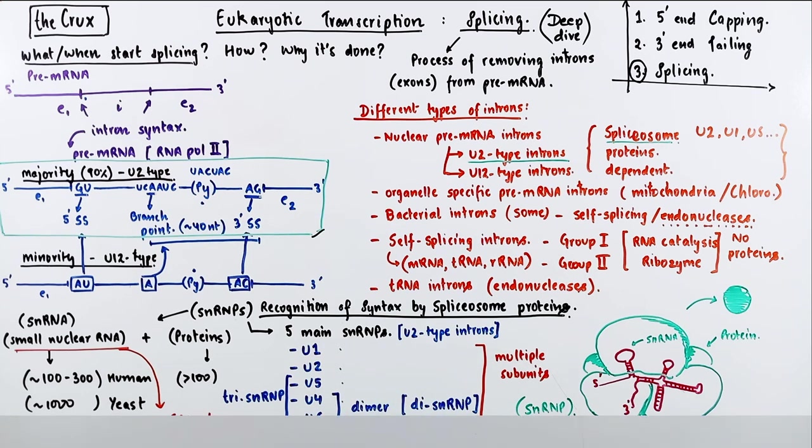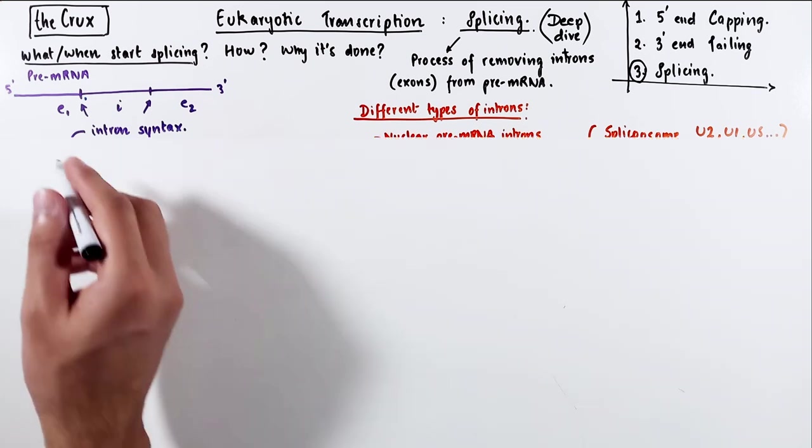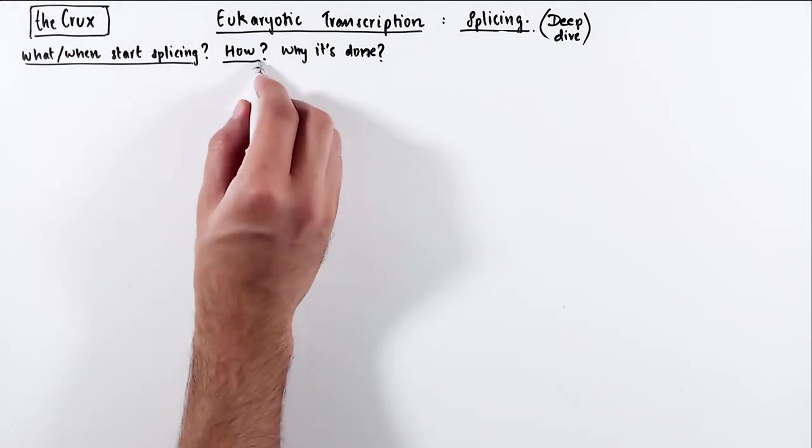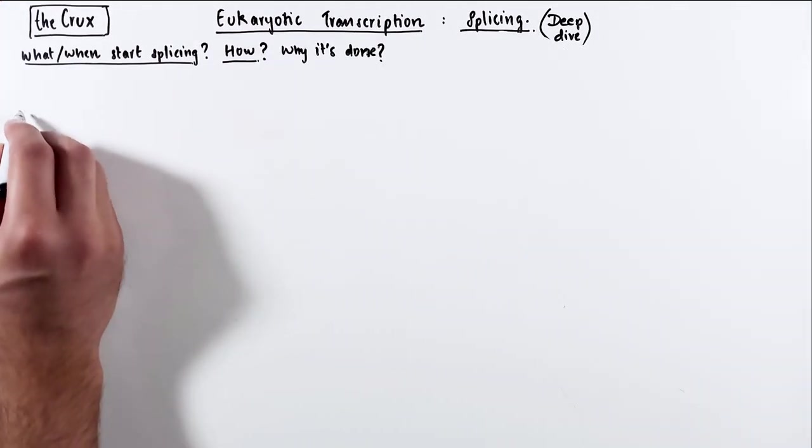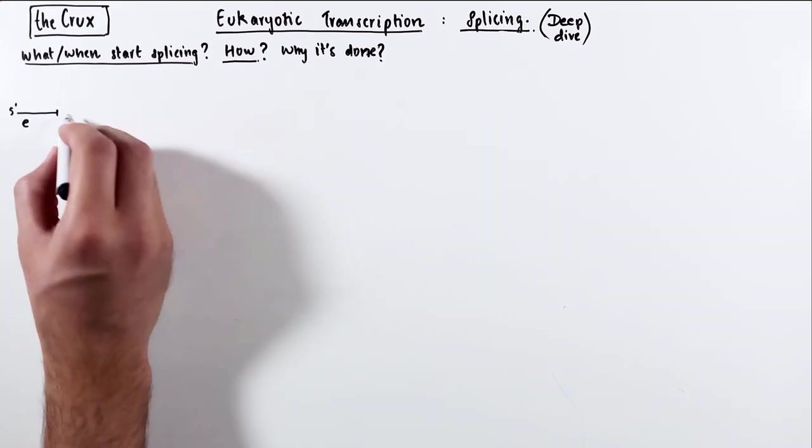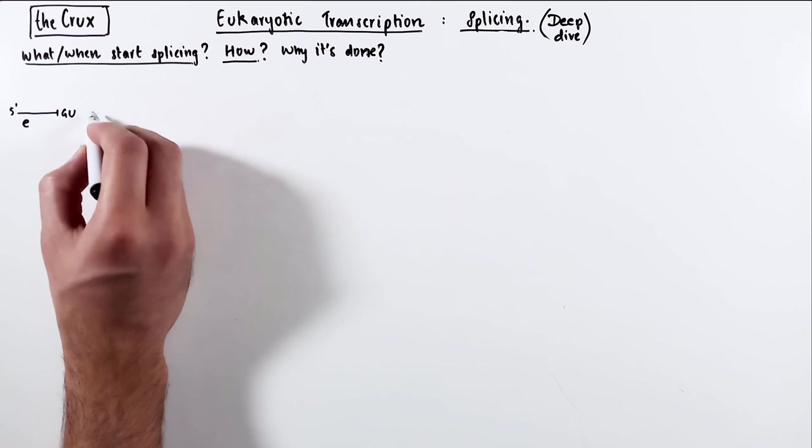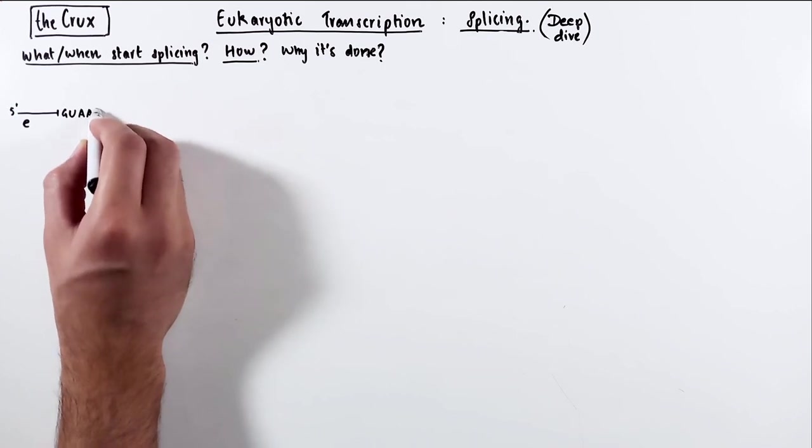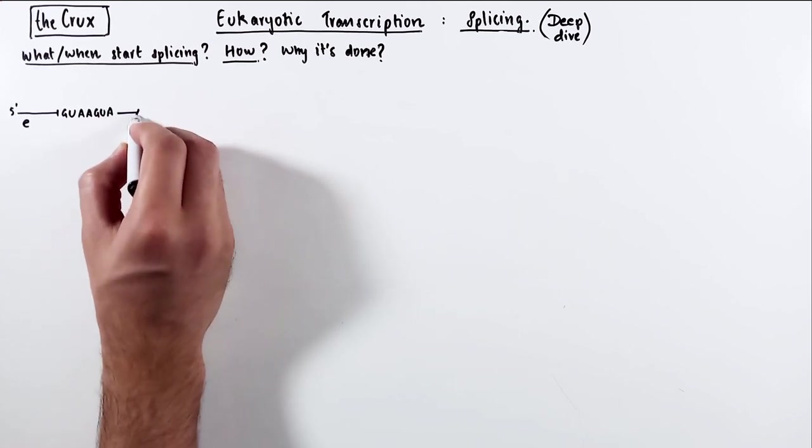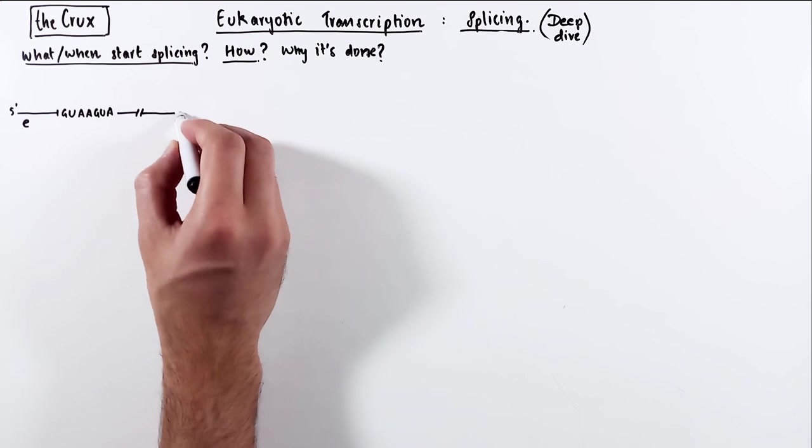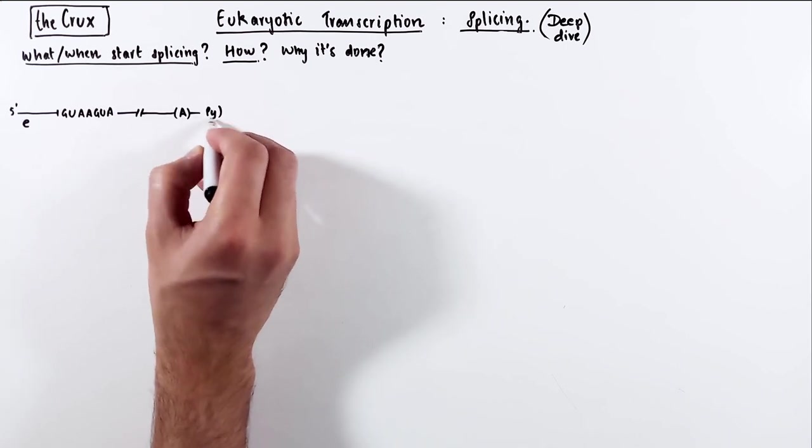So now that we understand when and what starts splicing, let's see how it is actually done. Since we are focusing on U2-type introns, I am going to draw out the pre-mRNA and the U2-type introns specifically. Here we have its 5' splice site